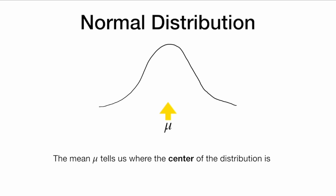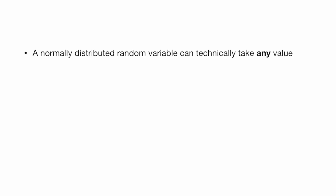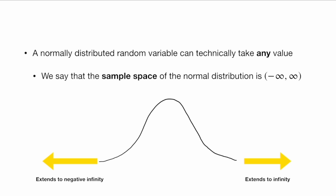The mean mu tells us where the center of the distribution is. The standard deviation sigma tells us how wide the distribution is. Now, a normally distributed random variable can technically take any value. We say that the sample space — the set of all possible values of the normal distribution — is all numbers from negative infinity to infinity. We can see this in the picture here, that these distributions in reality extend all the way out to infinity, and that all values are possible.